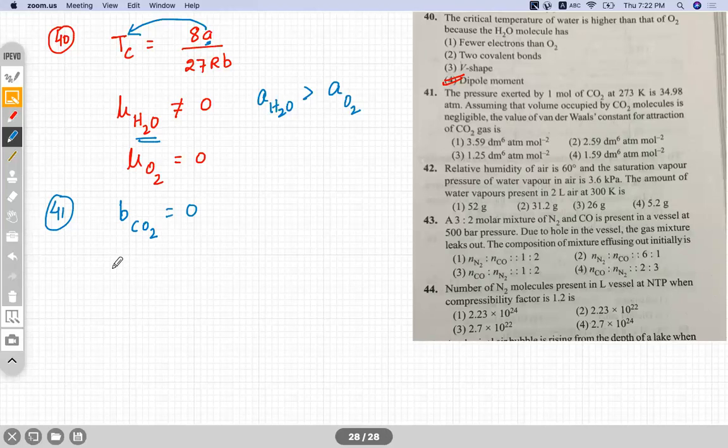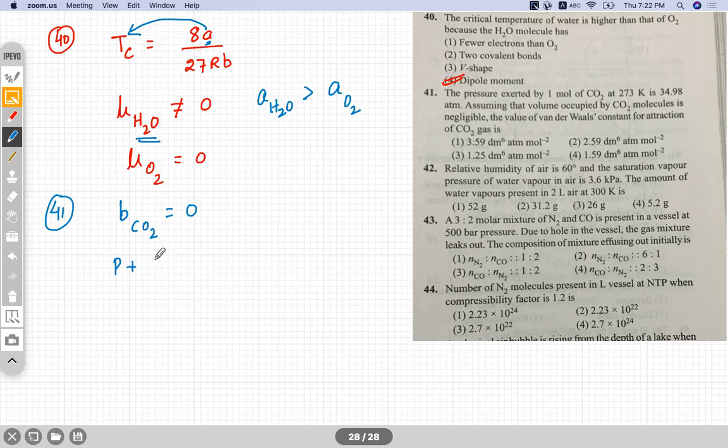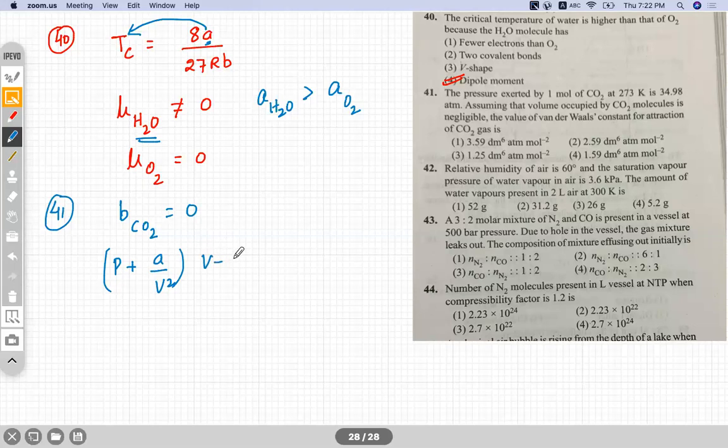So we know the Van der Waals equation: P plus A by V square for one mole into V minus B equals RT. B is zero, so this expression becomes P plus A by V square into V equals RT.